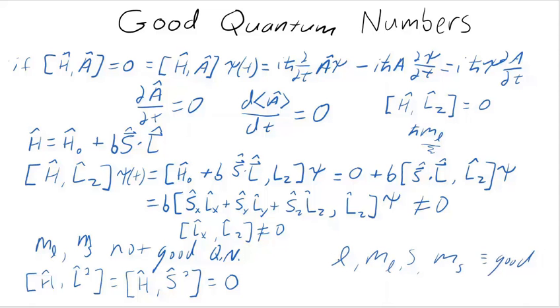And each one of these quantum numbers are associated with a commutator. L is associated with the commutator of the Hamiltonian with L squared. M sub L is associated with the commutator of the Hamiltonian with L sub Z.